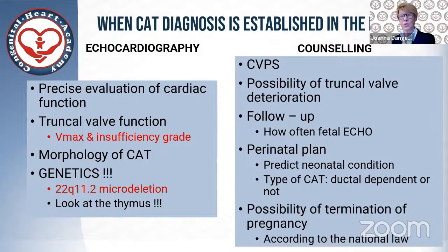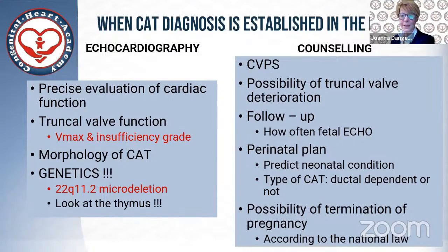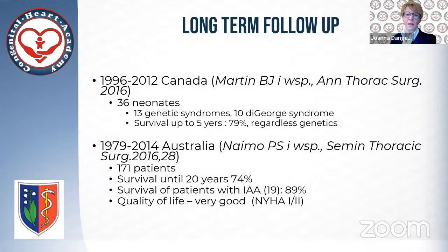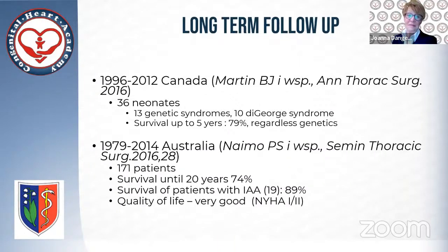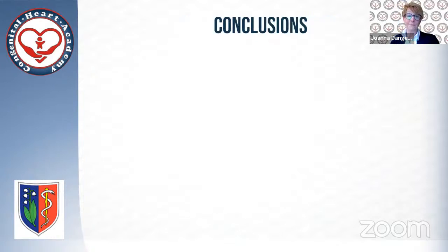So when common arterial trunk is diagnosed in the fetus, we have to evaluate cardiac function, truncal valve function and morphology, and we must remember about genetics. During counseling we must check the cardiovascular profile score, because according to this we know what the outcome of the baby can be. We must remember, especially in early pregnancy, that the truncal valve can deteriorate and the fetus can be in a very bad condition. Follow-up: we should perform fetal echo every four to six weeks. We should have the perinatal plan — predict the neonatal condition and type of common arterial trunk to give recommendations for treatment of the baby.